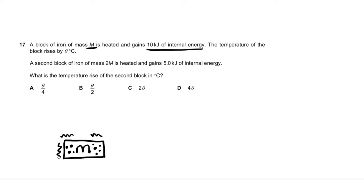That's a measure of heat. So the higher the internal energy of a block, the hotter it is. That's an intuitive way of understanding internal energy. The temperature of the block after it's supplied 10 kilojoules of internal energy rises. So it has an initial temperature and it rises by theta degrees Celsius.